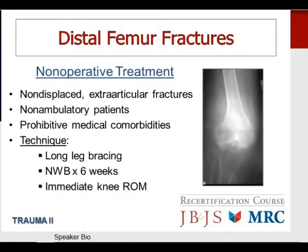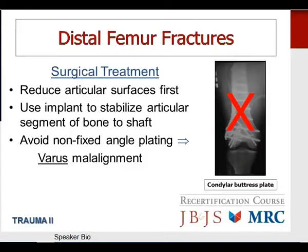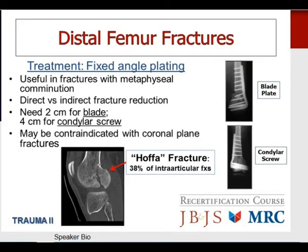Surgical treatment for distal femur fractures: reduce the articular surfaces initially, then use an implant — nail or plate — to stabilize the articular segment to the shaft. When plate fixation of complete articular distal femur fractures is performed, avoid non-fixed-angle plating due to significant risk of varus malalignment. Fixed-angle plating is very useful for fractures with significant metaphyseal comminution. A blade plate requires two centimeters of intact bone distally; a condylar screw requires four centimeters. These fixed-angle plates are contraindicated when there is an associated coronal plane fracture — the so-called Hoffa fragment, seen in about 38% of intra-articular distal femur fractures, typically involving the lateral femoral condyle.